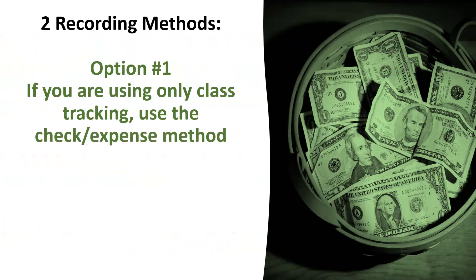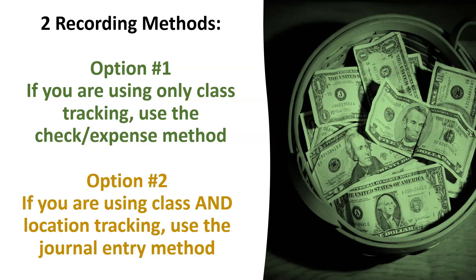There are two different methods to record the release of used funds from restriction. Option 1: if you are only using class tracking to track your line item transactions in QuickBooks Online, you will need to use the check or the expense method. Option 2: if you are using class tracking and location tracking, you will need to use a journal entry to record the release of the used restricted funds.